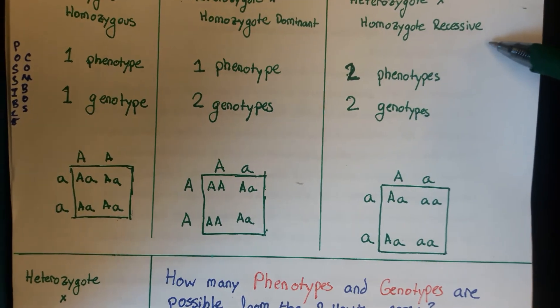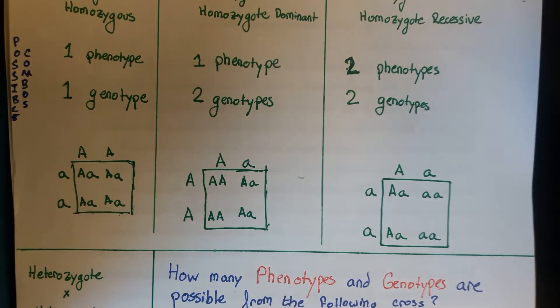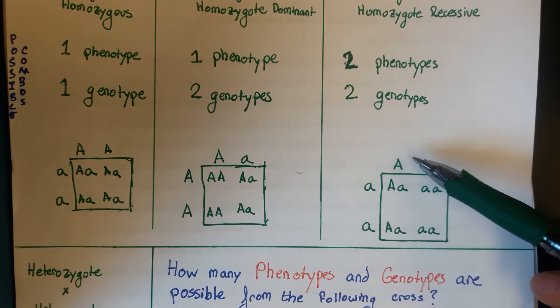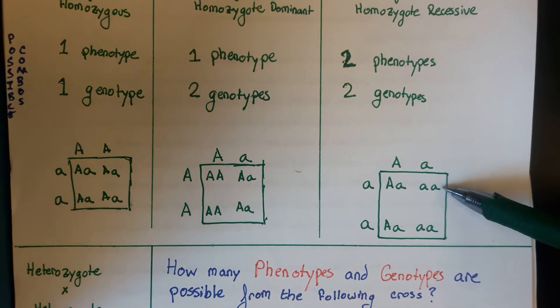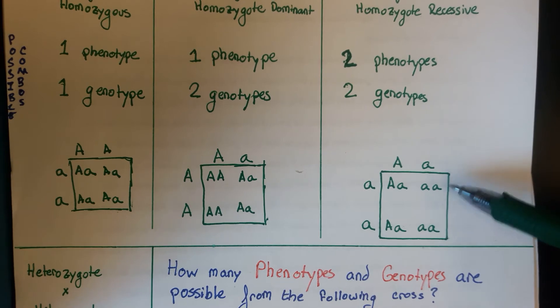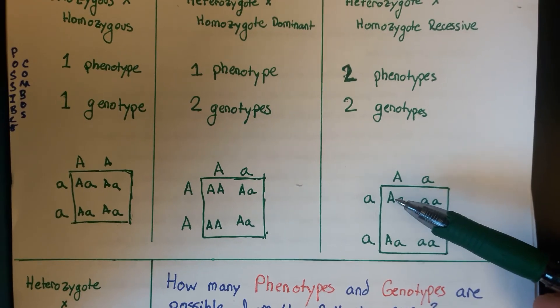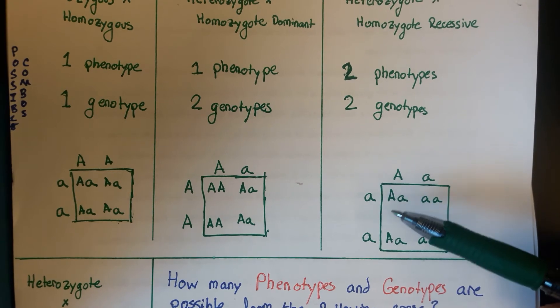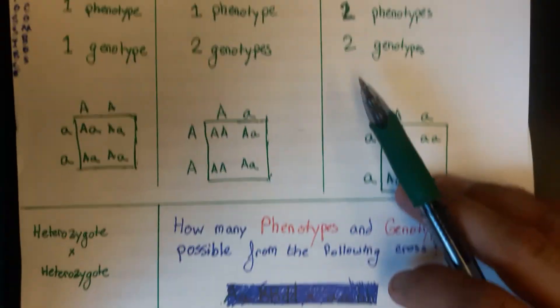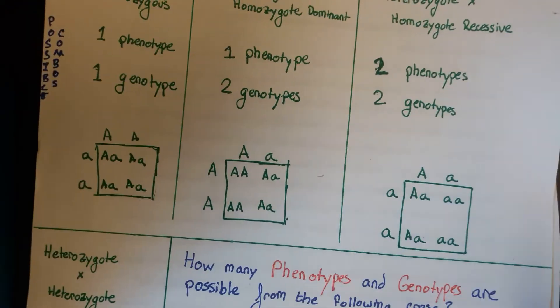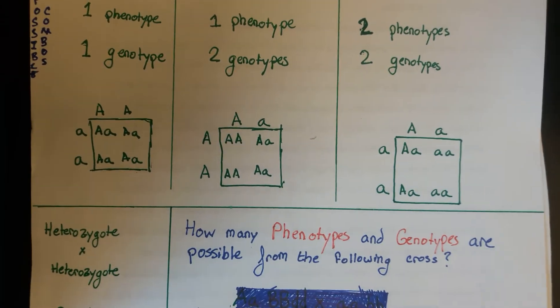Now if you cross the heterozygote times a homozygous recessive, the only thing that changes is the number of phenotypes. It essentially looks just like this cross, only instead of homozygous dominant, you're generating homozygous recessive in the next generation. You can see how that works and you know that here this is one phenotype and then this would give you the second phenotype, that recessive phenotype. So hopefully all four of those conditions make sense. And then we're going to look at a problem and see how that would apply.